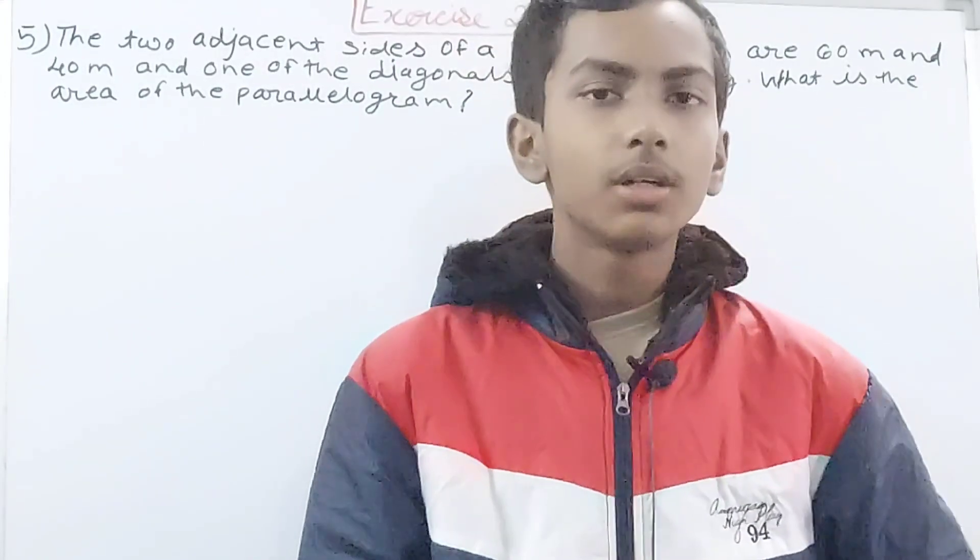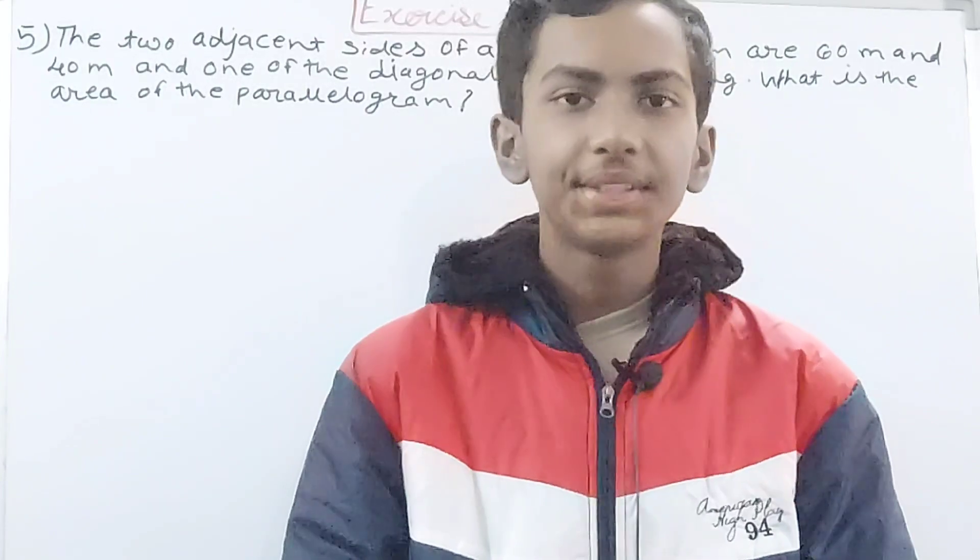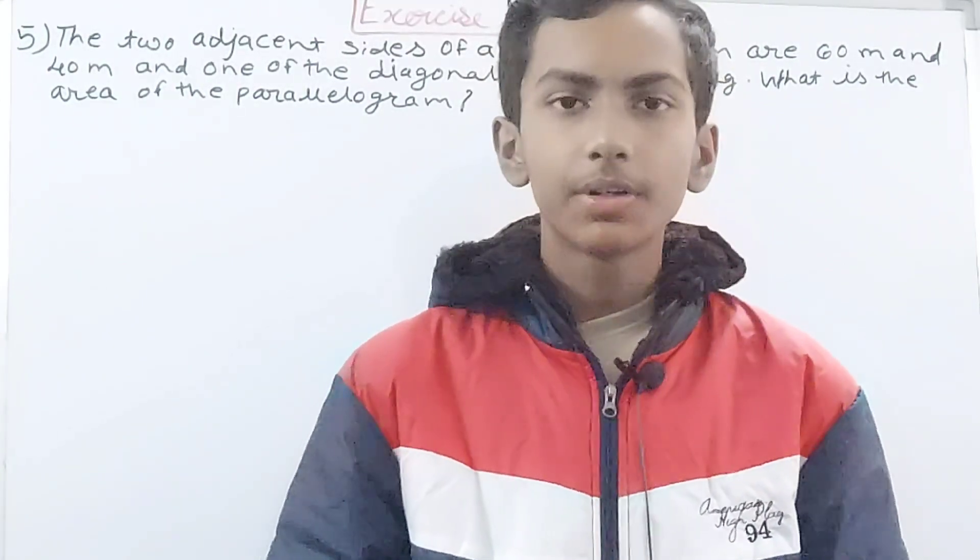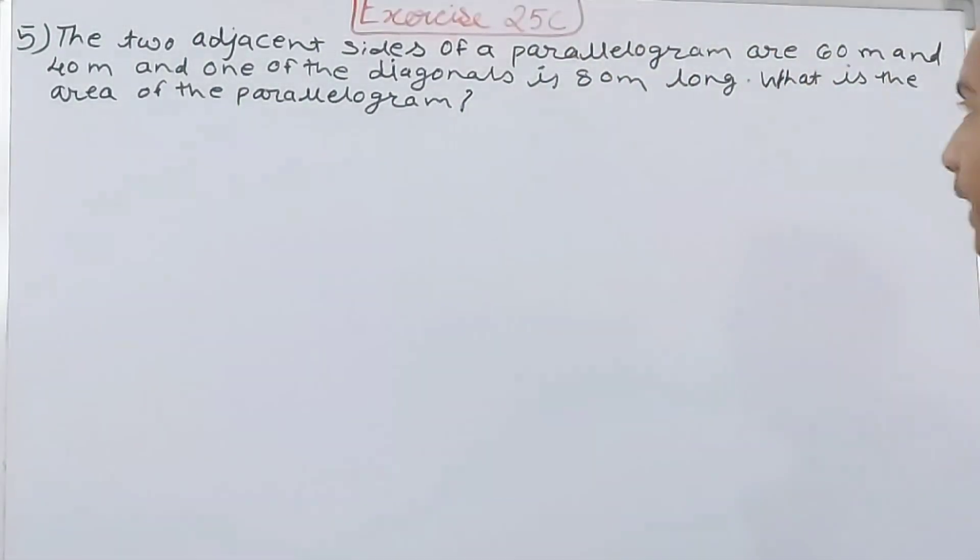Hello friends, welcome back to my YouTube channel Lockheil Learning. In this video, we are going to solve ICSE Mathematics Class 8, Chapter 25, Area of Rectilinear Figures, Exercise 25C, Question Number 5. The two adjacent sides of a parallelogram are 60 meters and 40 meters, and one of the diagonals is 80 meters long. What is the area of the parallelogram?